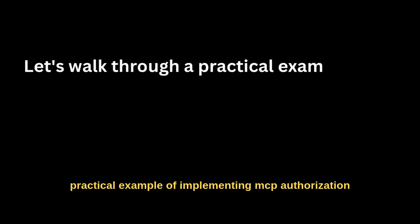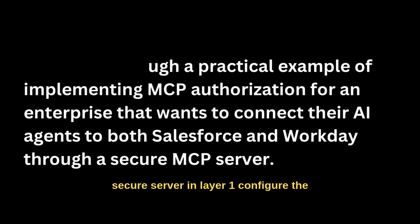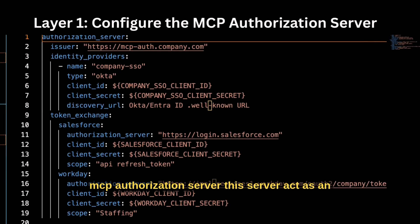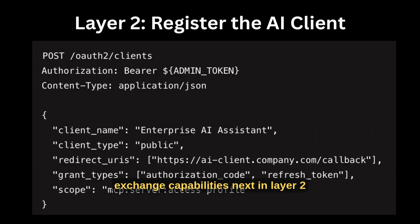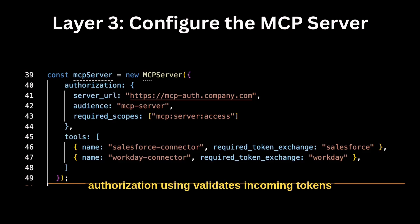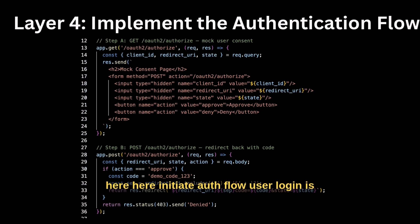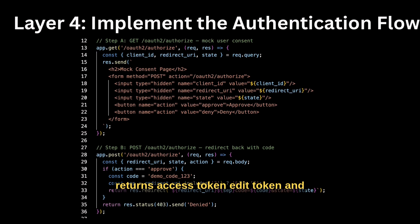Let me walk through a practical example of implementing MCP auth for an enterprise that wants to connect their AI agents to both Salesforce and Workday through a secure MCP server. In layer 1, configure the MCP authorization server — this server acts as an OAuth 2.0 authorization server with token exchange capabilities. In layer 2, register the AI client — the AI client is publicly registered in your MCP auth server. In layer 3, configure the MCP server — your MCP server enforces authorization by validating incoming tokens from the AI client and associating each tool with downstream identity access configuration. In layer 4, the AI client authorization flow happens: initiate auth flow, user login is authenticated via SSO, the authorization server returns an access token, ID token, and refresh token.